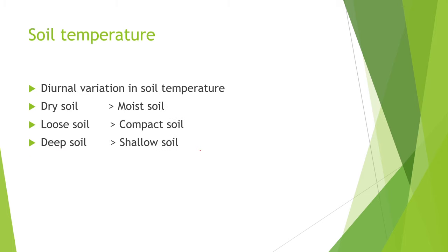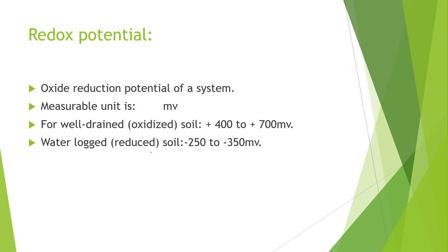Next topic is soil temperature and redox potential. The diurnal variation in soil temperature: dry soil has greater temperature than moist soil; loose soil has greater temperature than compact soil; deep soil has greater temperature than shallow soil. The combined action of reduction and oxidation is called redox, measured in millivolt. For well-drained and oxidized soil, it ranges from +400 to +700 millivolt. In waterlogged or reduced soil, it ranges from −250 to −350 millivolt.